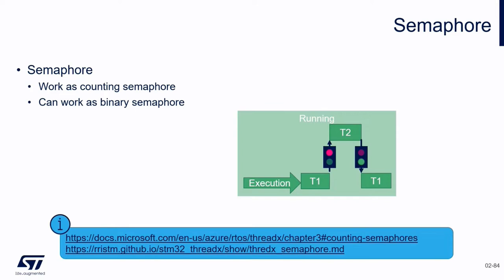ThreadX provides a 32-bit semaphore. The typical operations for the counting semaphore are TX_GET and TX_PUT. The GET operation decreases the semaphore by one, and if the semaphore is zero the operation is not successful. The inverse, the PUT operation, increases the semaphore by one.